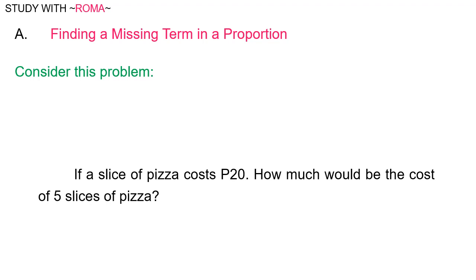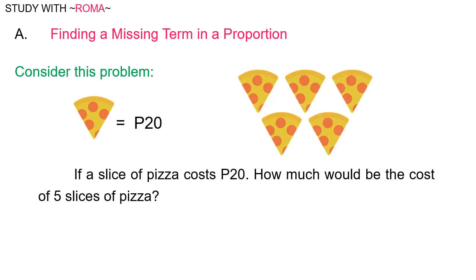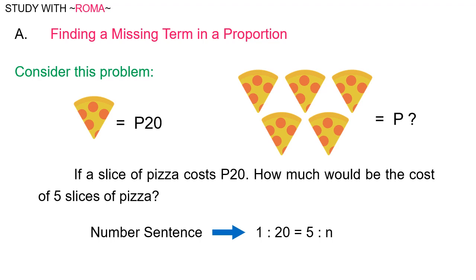Let's consider this word problem. If a slice of pizza costs 20 pesos, how much would be the cost of 5 slices of pizza? This problem can be written as a proportion: 1 is to 20 is equal to 5 is to n. To solve this, we have to find the value of n.